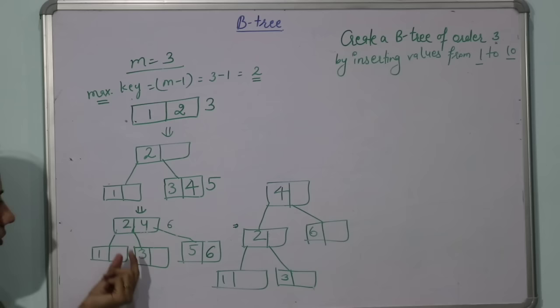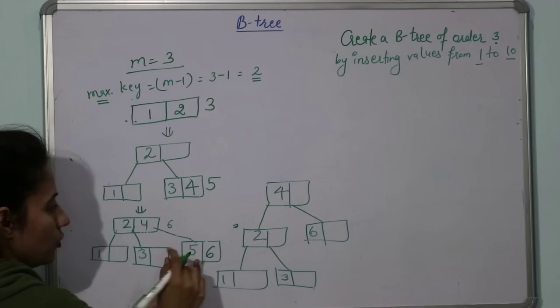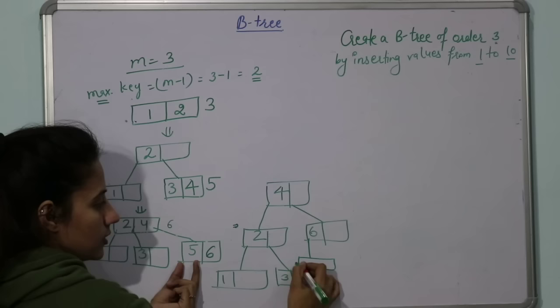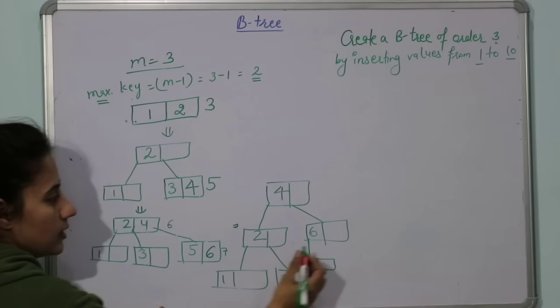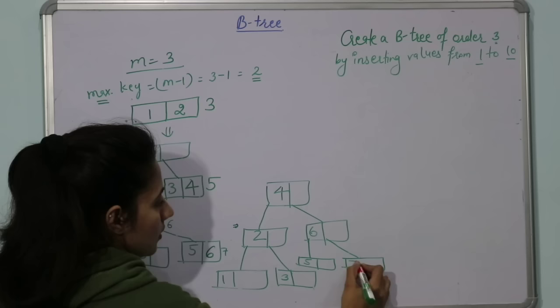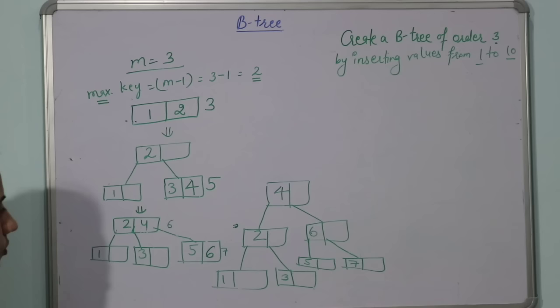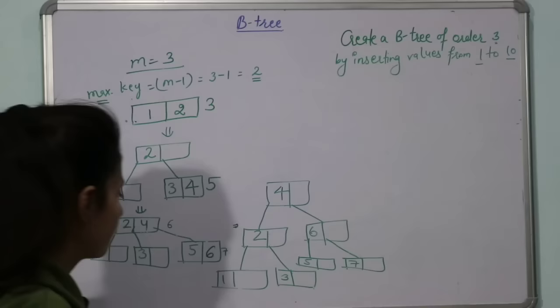And 6 is on top. 5 is to the left of 6 because it is less than 6. 7 needs to be inserted, so 7 goes to the right of 6.